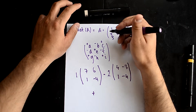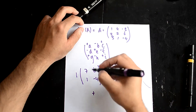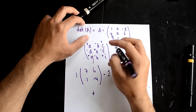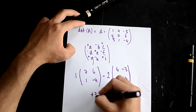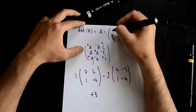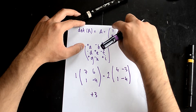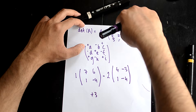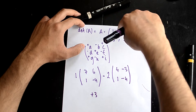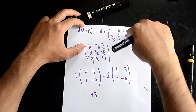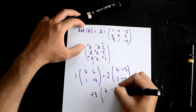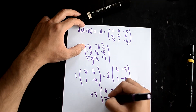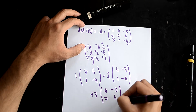For the last element, it's going to be positive 3, because the sign matrix shows positive. If I cover the corresponding row and column, the remaining 2x2 matrix gives you: 4, minus 3, 7, 6.